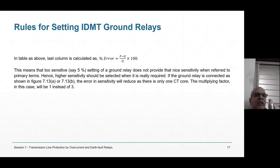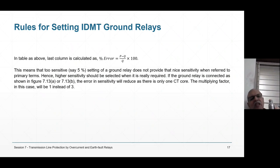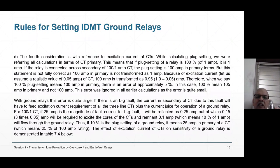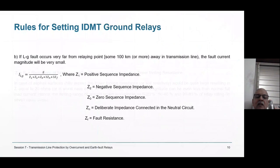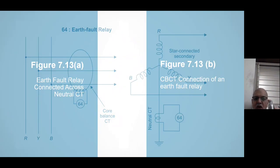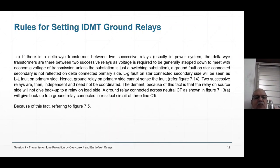The relay current is three times worse if you connect three CTs in residual. If you use a CBCT or a neutral CT, there is only one CT, so that multiplier of three is eliminated, and the relay can be made more sensitive with those connections.